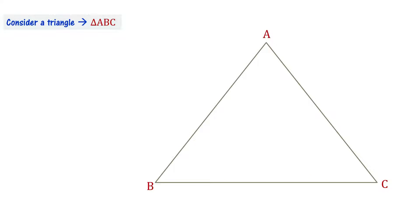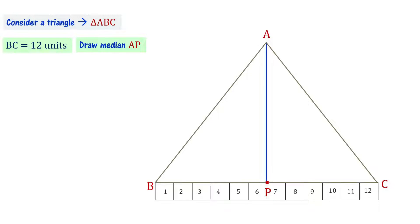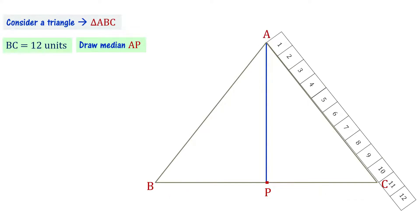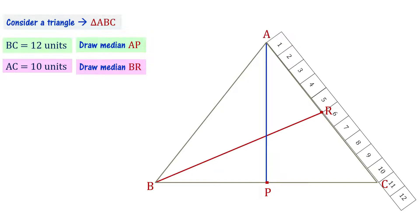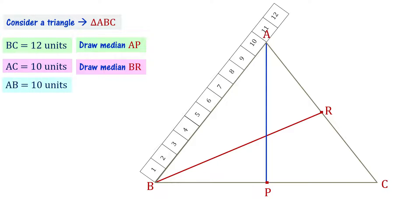Let us consider another triangle ABC. Side BC has 12 units length, so its midpoint P is at 6 units. Let me draw median AP. Similarly, side AC is 10 units, so its midpoint R is at 5 units — we draw median BR. Side AB is also 10 units, so its midpoint is at 5 units — we draw median CQ. The three medians intersect at one point, and that intersection point is the centroid O.